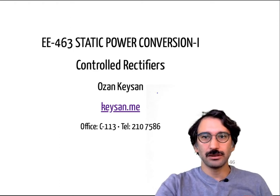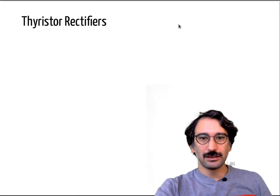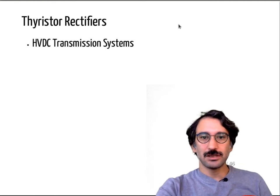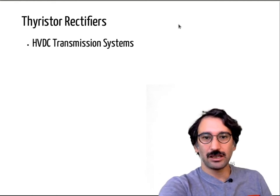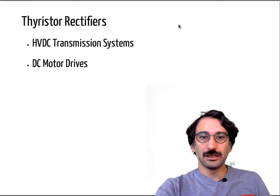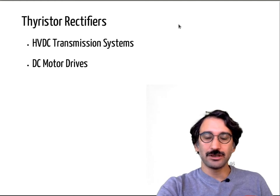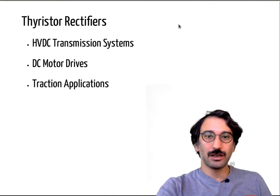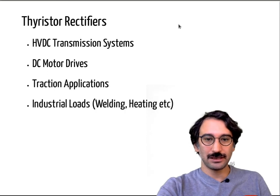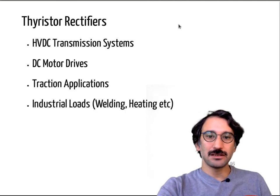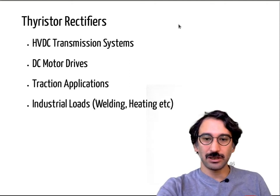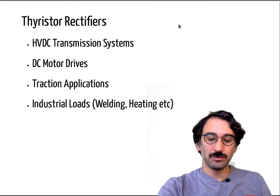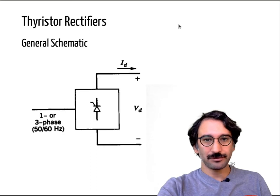Today we will talk about controlled rectifiers using thyristors, also called thyristor rectifiers. They are commonly used in high voltage DC transmission systems requiring high voltage and high current switching. They are also used in DC motor drives to control armature voltage, in traction applications requiring large starting current and torque, and in industrial equipment such as welding devices and industrial furnaces.